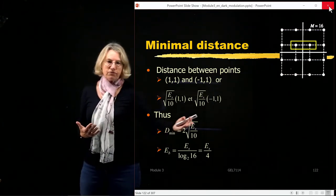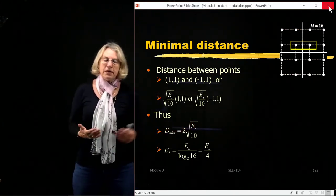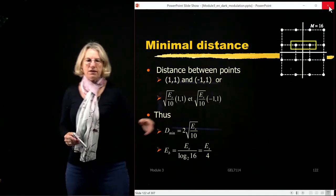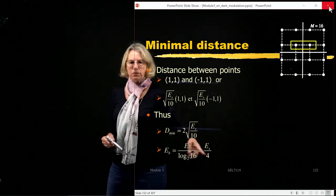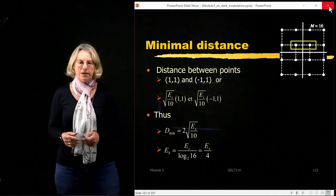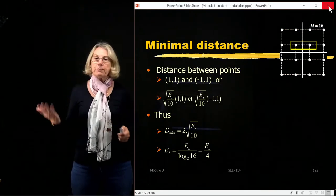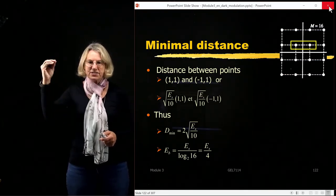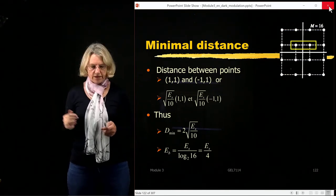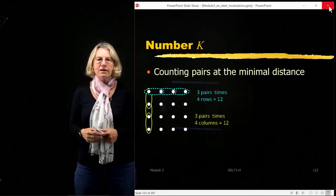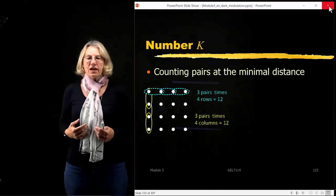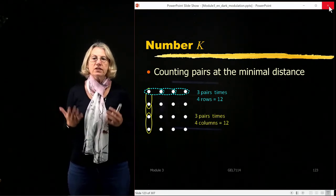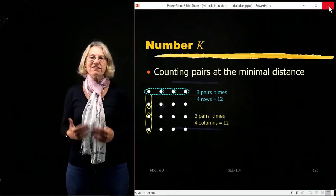We can also convert from ES to EB — that's just based on log₂M. So ES equals 4 times EB for 16-QAM. The next step in estimating the probability of error is to count the number of pairs at the minimal distance.